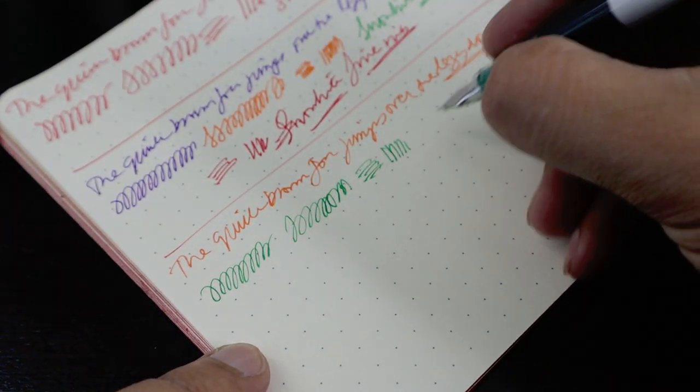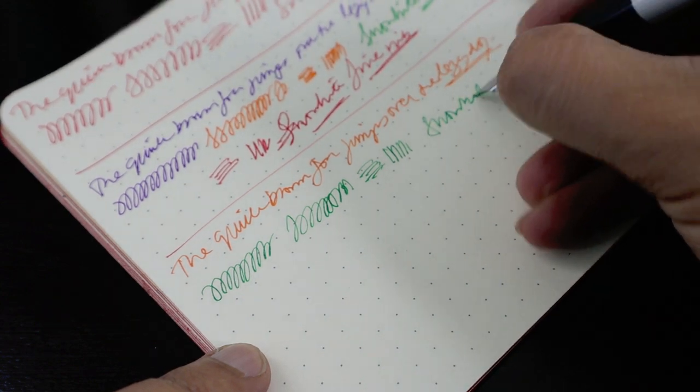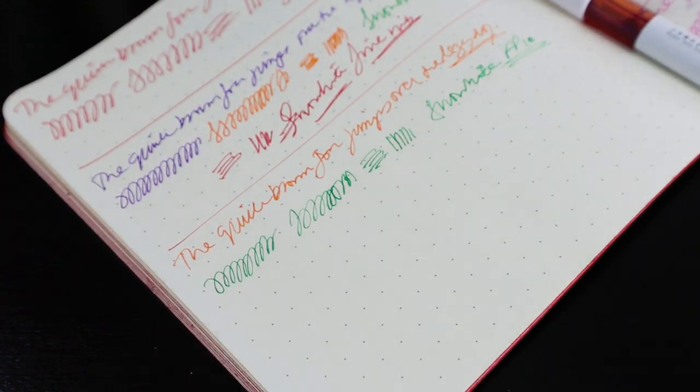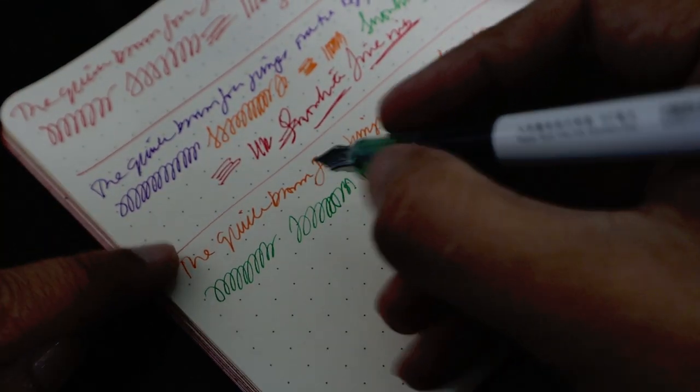So this is extra fine, it's called Snow White FP10. The last we showed you was FP20.